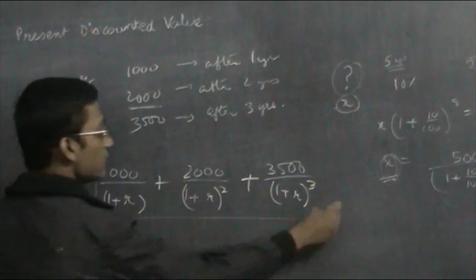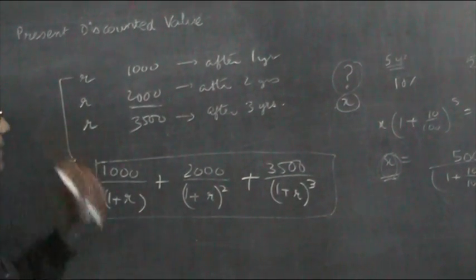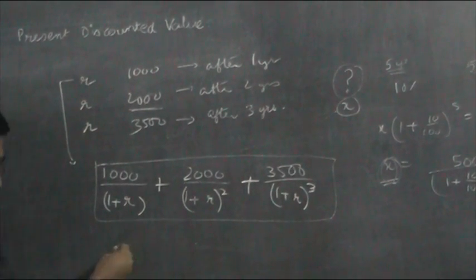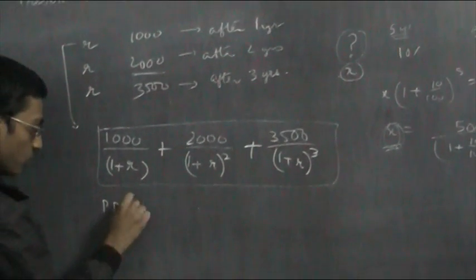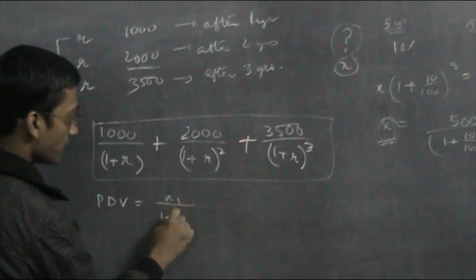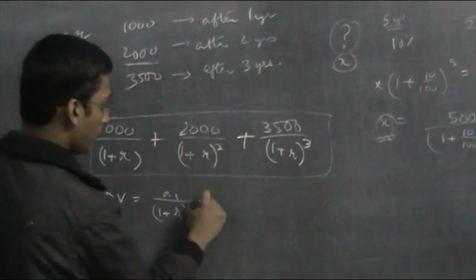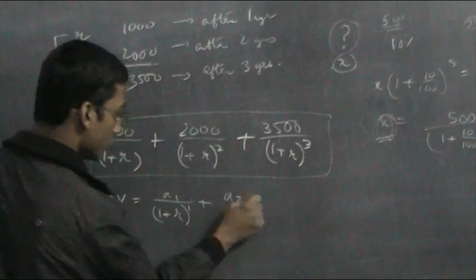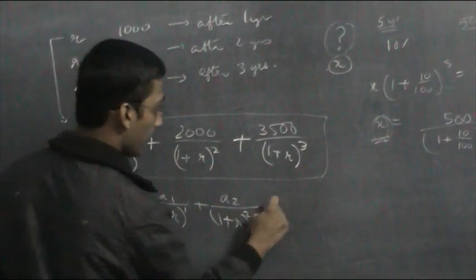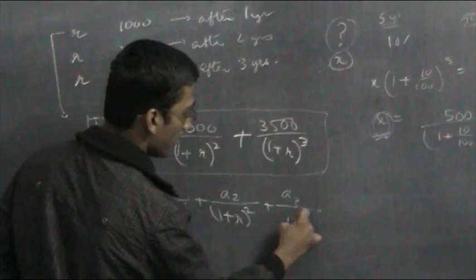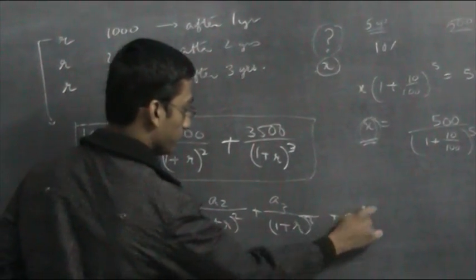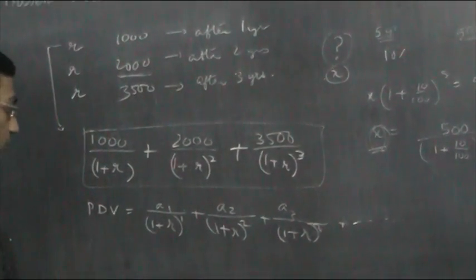This much is what I should deposit so that I am able to make all 3 payments. In general, the present discounted value is A = Σ (A_t / (1 + R)^t). This is the present discounted value.